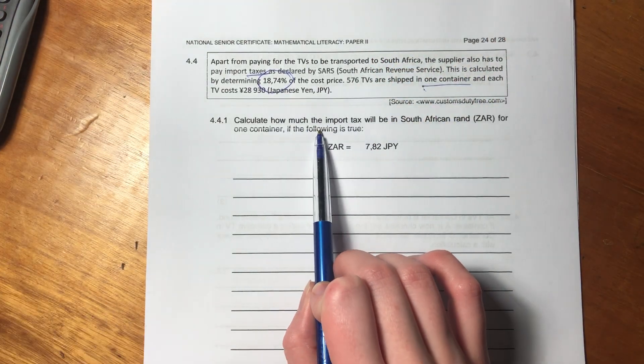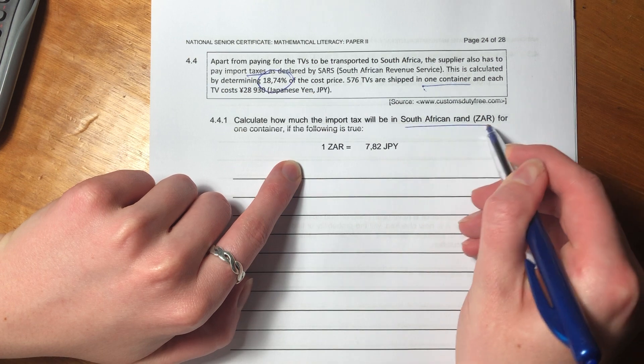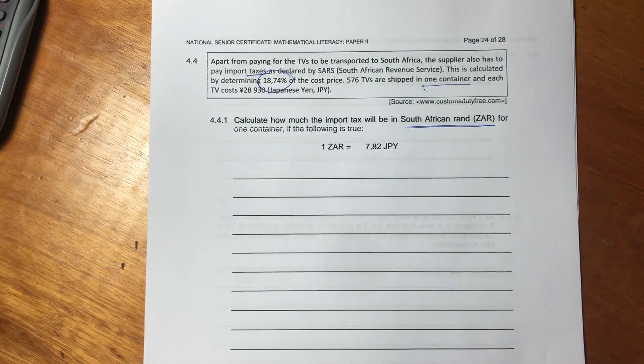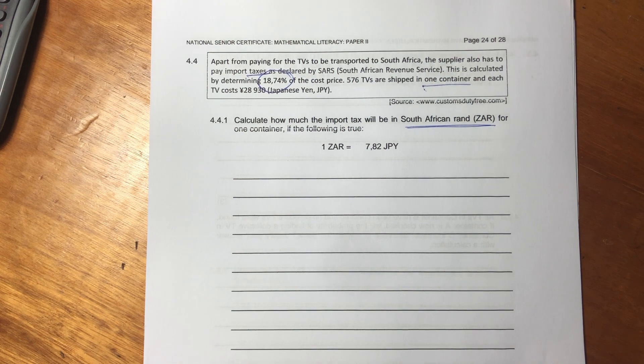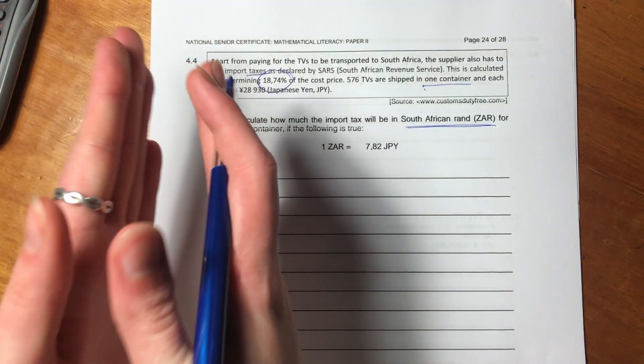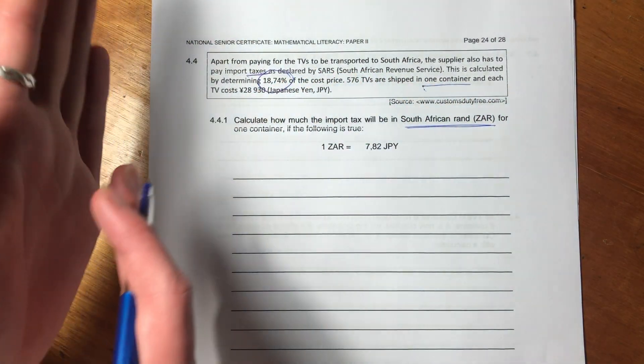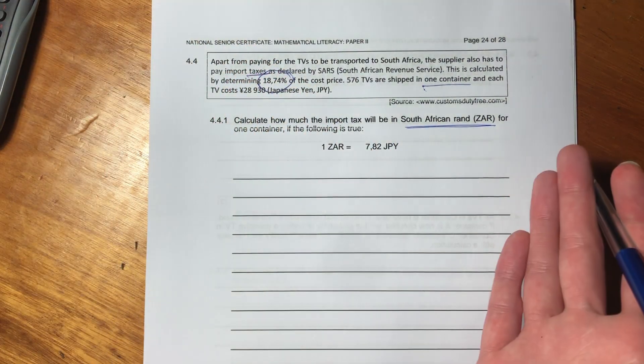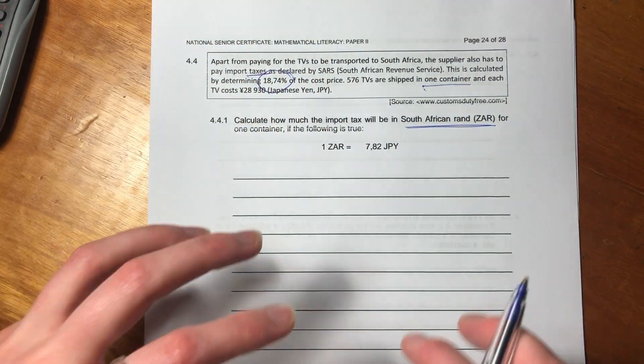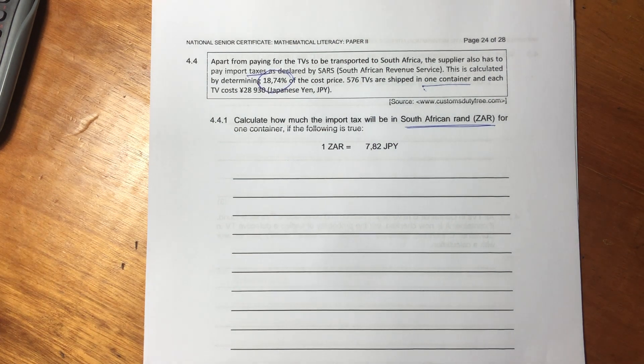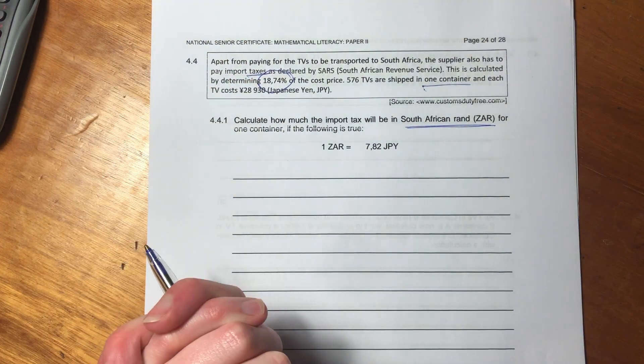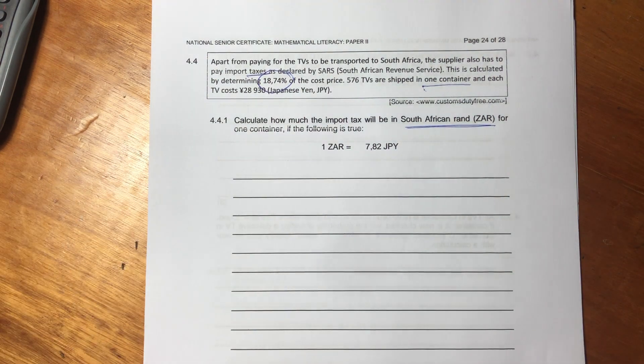So it says calculate how much the import tax will be in South African Rand for one container if the following is true. So now there's two ways we can go about this. We could change the cost of the TV into rands and then calculate the tax. Or we can just keep it in yen, calculate the tax and then convert it to rand. So I'm going to do the latter one. If you want to do the former, do that, and maybe it's a good way of checking that you can do this in different ways.